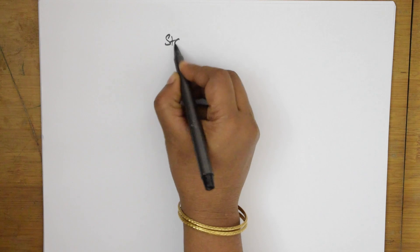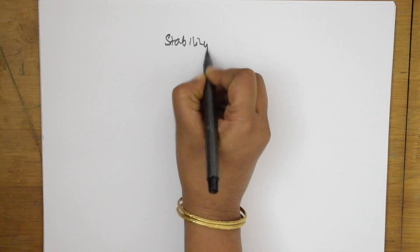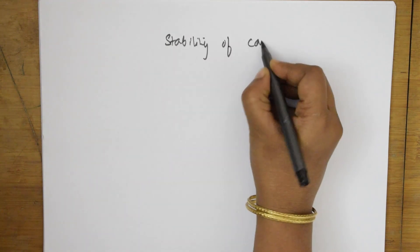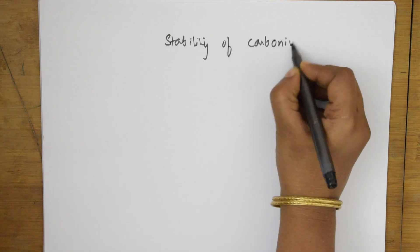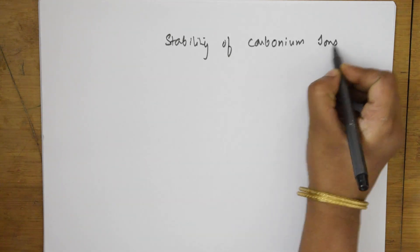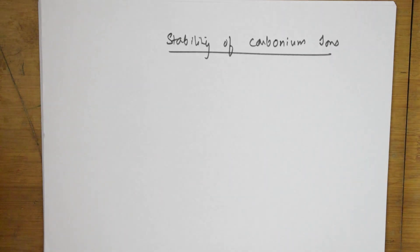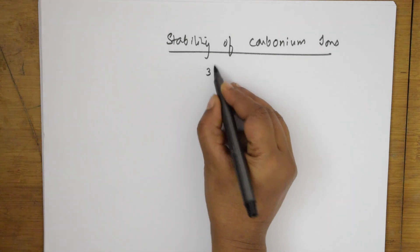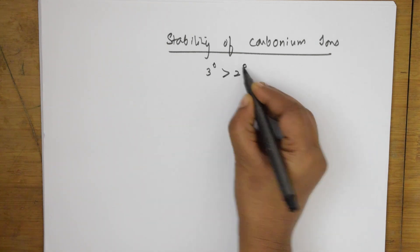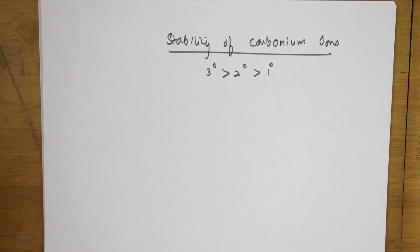Now let's see how we can explain the stability of carbonium ions. The next effect is the stability of carbonium ions. I am going to use the hyperconjugation concept here. The order of stability of carbonium ions: tertiary is greater than secondary, which is greater than primary. This can be explained using hyperconjugation.